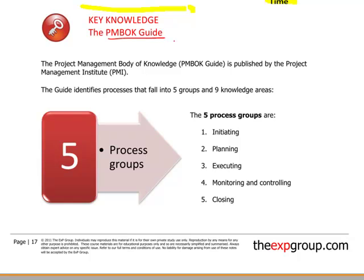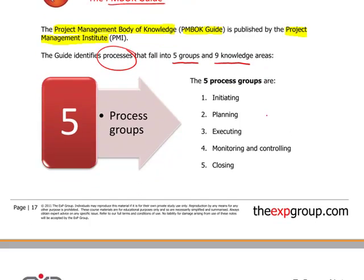The PMBOK guide originates from Project Management Body of Knowledge, published by the PMI, the Project Management Institute. The guide identifies processes — different processes relating to various aspects of project management. Those processes fall into five groups and nine knowledge areas. The five process groups are: initiating, planning, executing, monitoring and controlling, and closing.